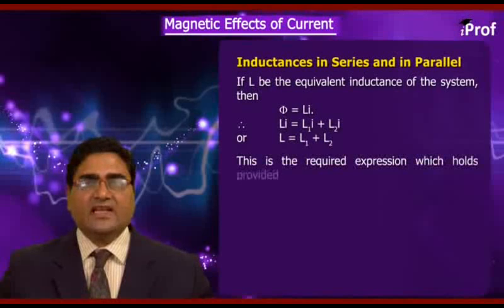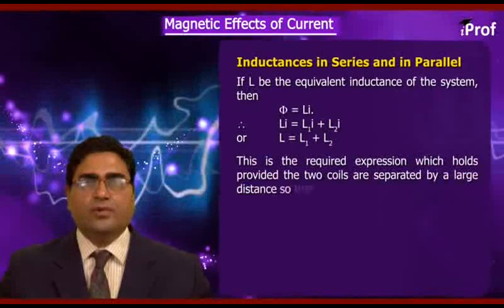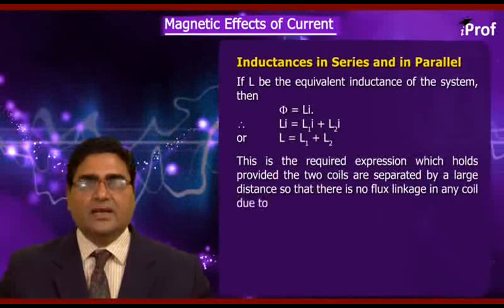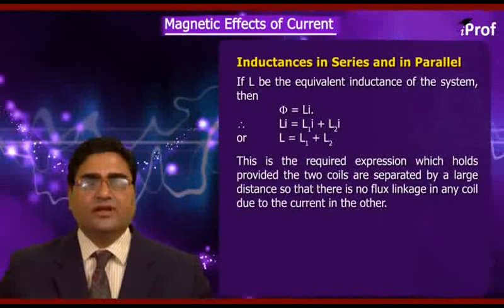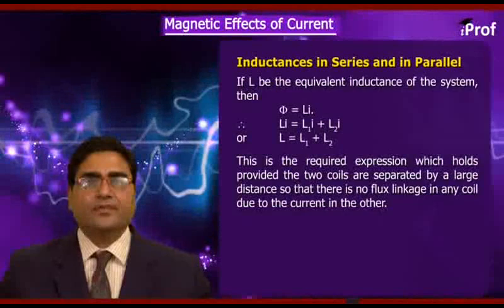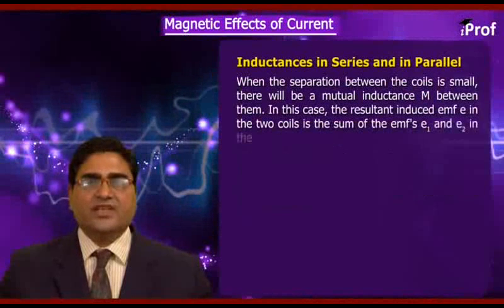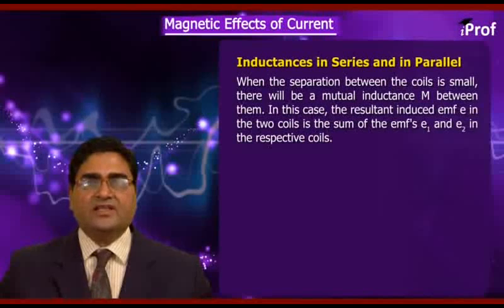Therefore L = L1 + L2. This holds provided the two coils are separated by a large distance so that there is no flux linkage in any coil due to the current in the other. However, when the separation between the two coils is small, there will be a mutual inductance M between them.